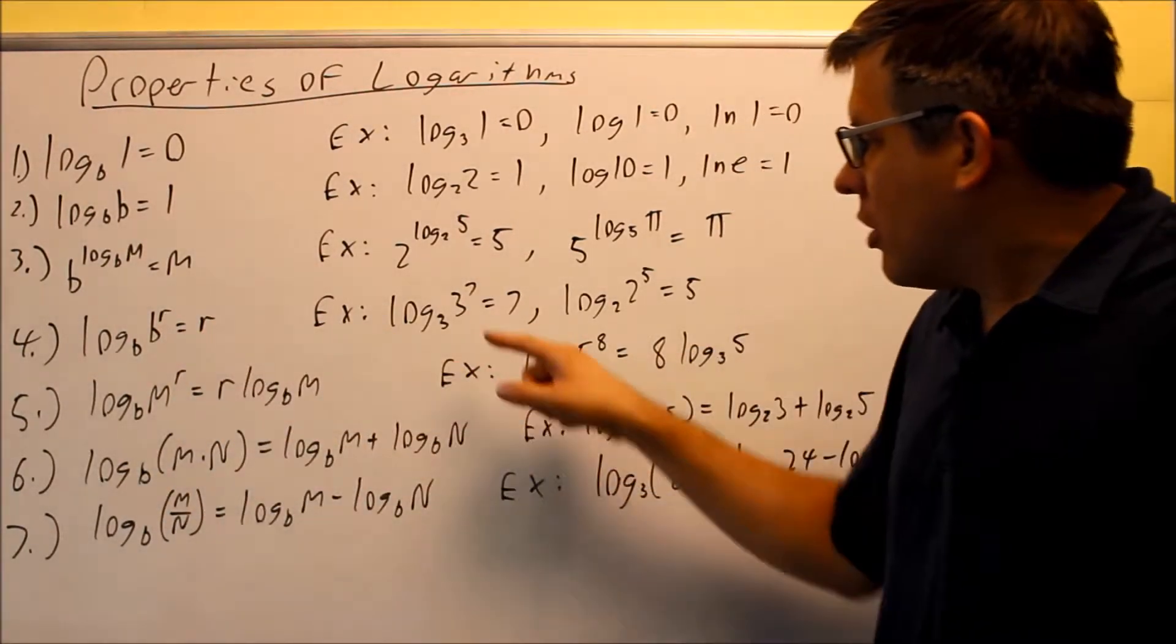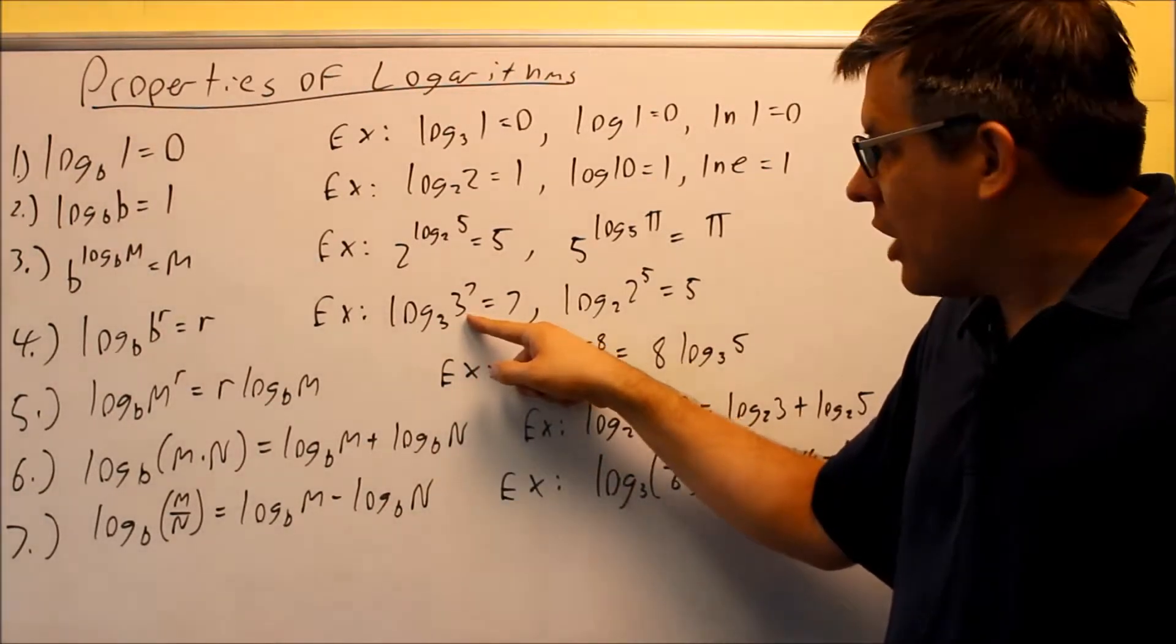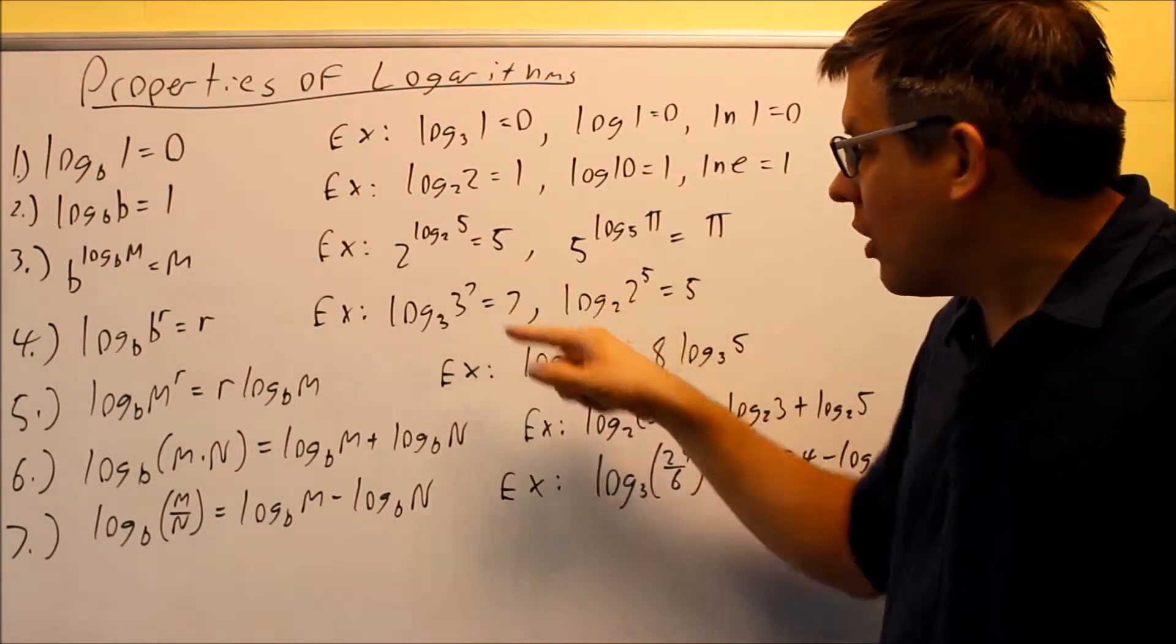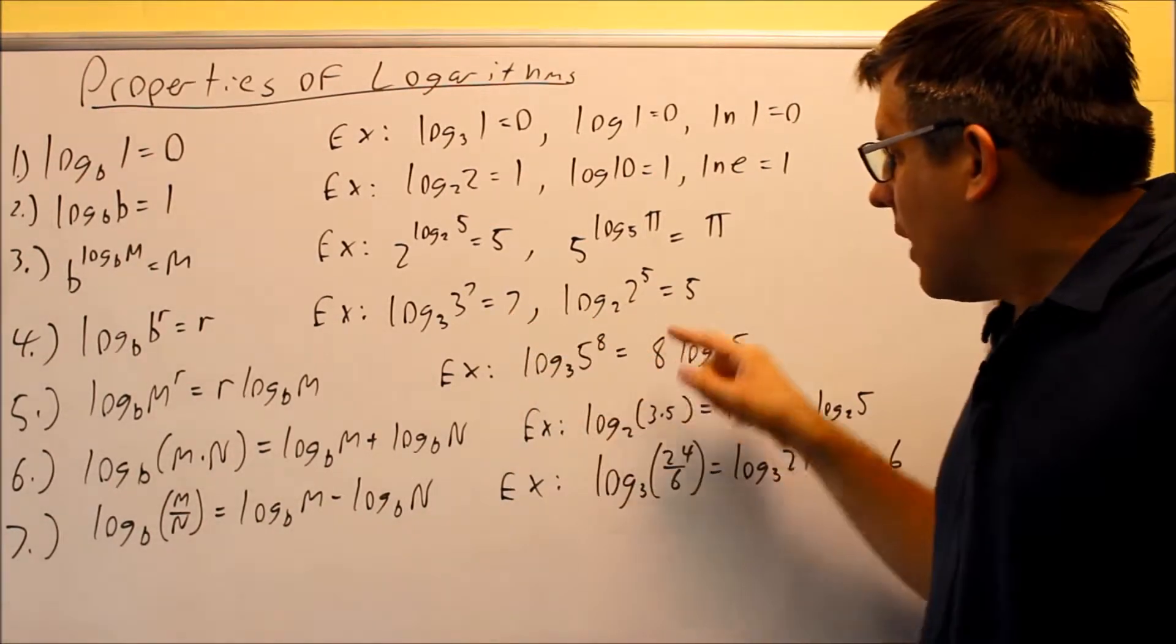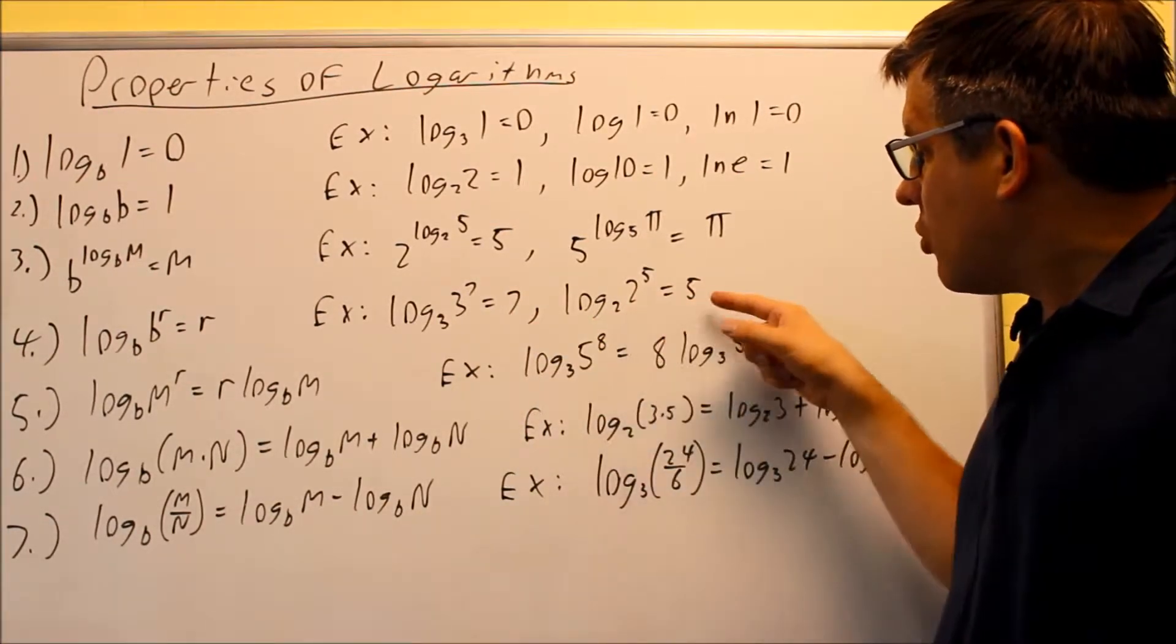So for number 4, if the base matches the one immediately afterwards, you end up with the exponent part only. This equals 7, and these two match to equal 5.